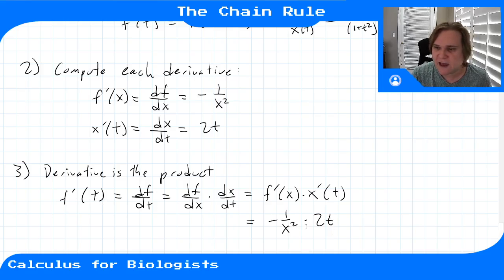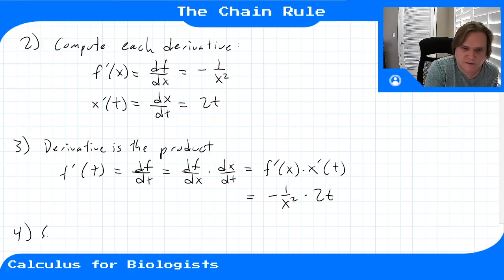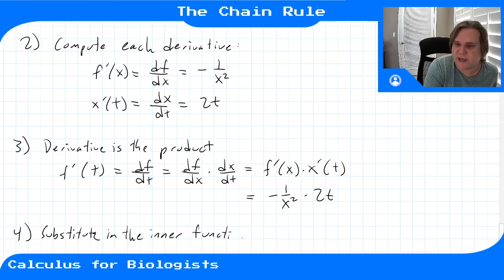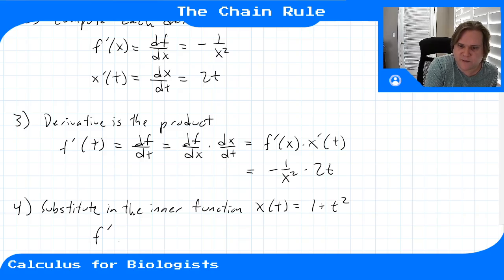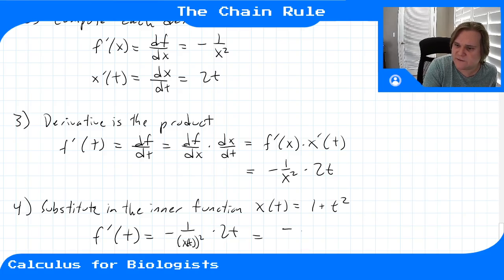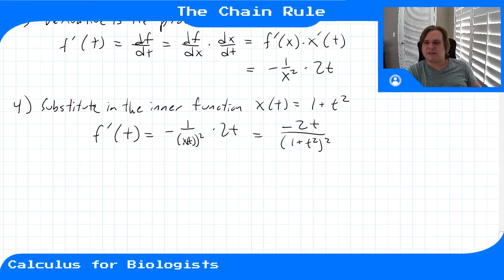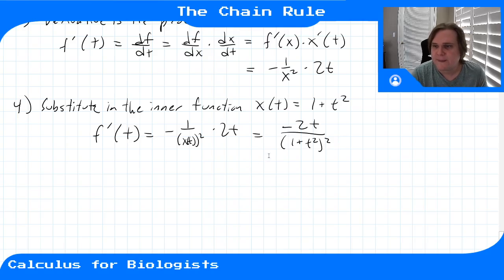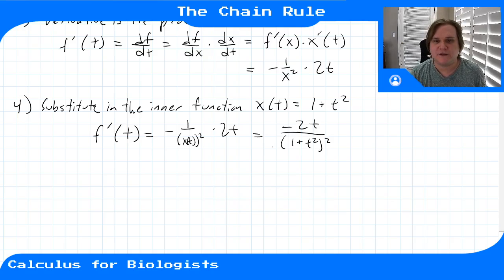We're not done yet because this is supposed to be a function of time, but we still have x in it. The last step is to substitute in the inner function x of t equals 1 plus t squared. So f prime of t equals negative 1 over (x of t) squared times 2t, giving negative 2t over (1 plus t squared) squared. If we computed the same derivative using the quotient rule, we'd get the same answer.